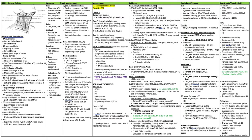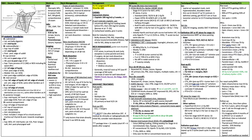Evidence for radiation alone with altered fractionation: RTOG 9003 (Beitler, Red Journal 2014) looked at stage 3-4 squamous cell cancers, and stage 2 for base of tongue and hypopharynx. They were treated with radiation alone in four arms. The first was standard fractionation: 70 Gy in 35 fractions at 2 Gy per fraction.